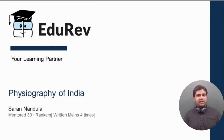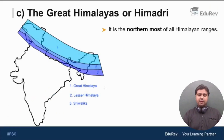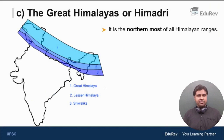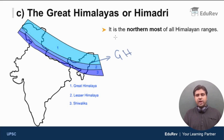We have discussed about the Middle Himalayas and the important ranges of Middle Himalayas. Now in this video, we are going to discuss about the Great Himalayas or Himadri. So the region marked 1 here is where the Great Himalayas are present. It is the northernmost of all Himalayan ranges.